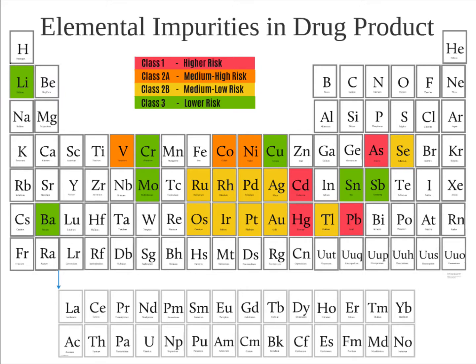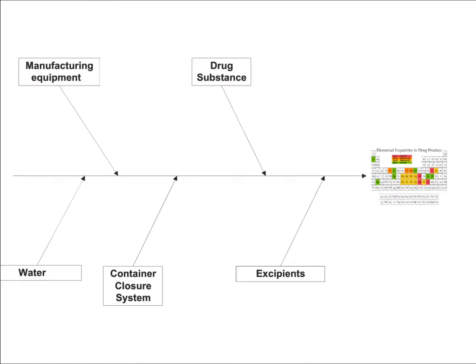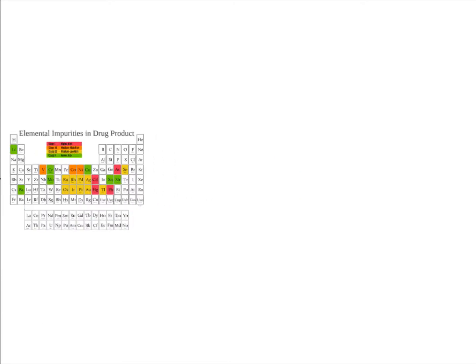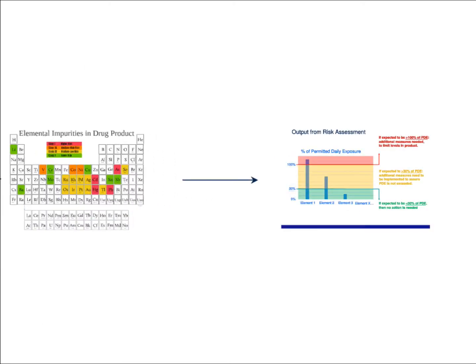How they actually came up with these limits for each element can be found in appendix one of the guideline. You need to carry out a risk assessment that considers each of these impurities and their potential route for entering your drug product. The guideline presents a fishbone diagram that shows the areas that should be considered for each product. The elemental impurities could be residual catalysts from the API manufacturer, present in excipients, leached from the manufacturing equipment, from the water system, or from the primary contact packaging materials. The output of the risk assessment will then identify the expected levels of each of the elemental impurities in your product.